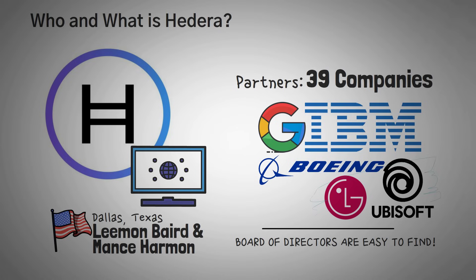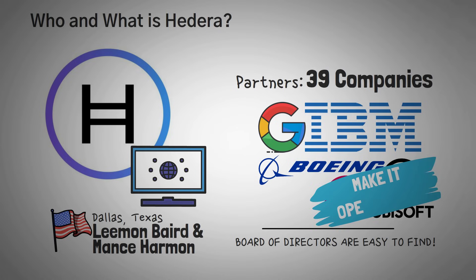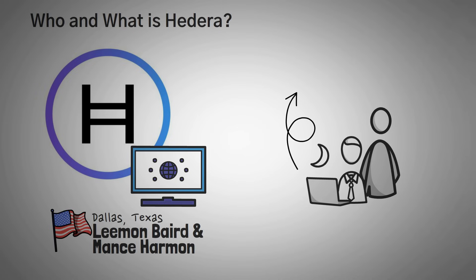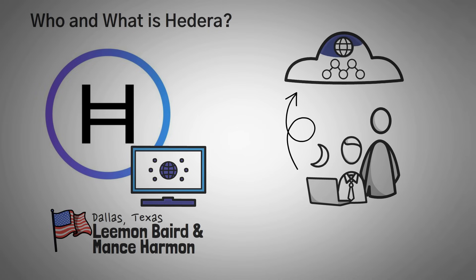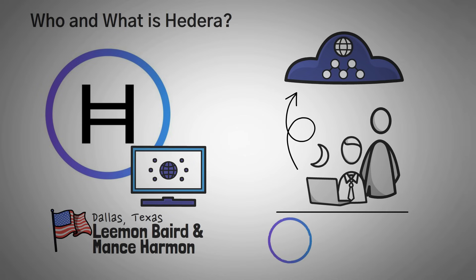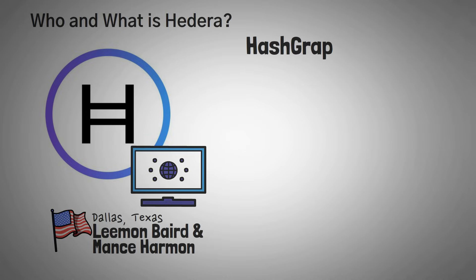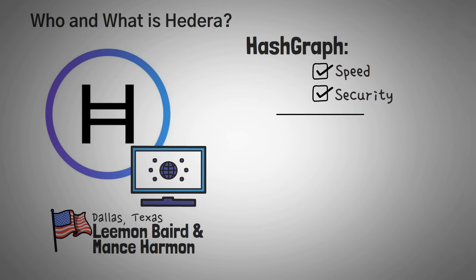Despite all these companies protecting their use of patents, they've apparently voted to make the Hashgraph algorithm open source at some point. Hedera is a company that has created several services to help developers build applications on their Hashgraph mainnet, with the intent that companies and people all over the world can have easy access to this technology. They believe blockchain technology is too complicated, too slow, and insecure for widespread adoption, and that Hashgraphs solve the speed and security issues.